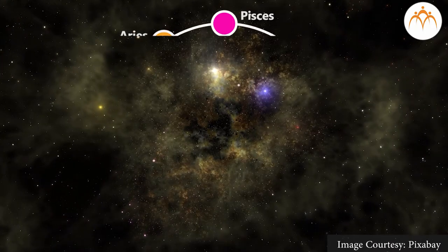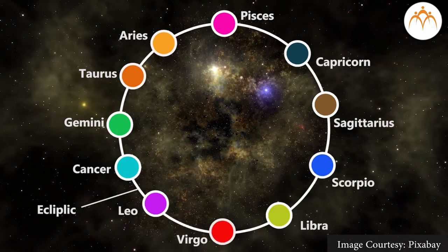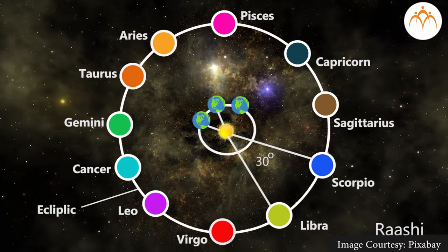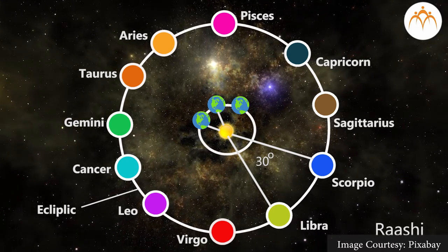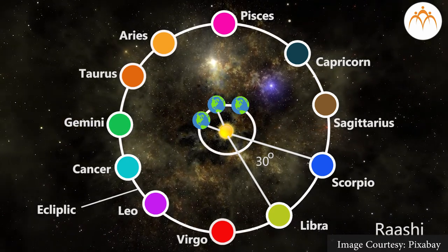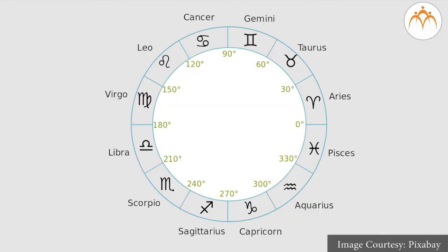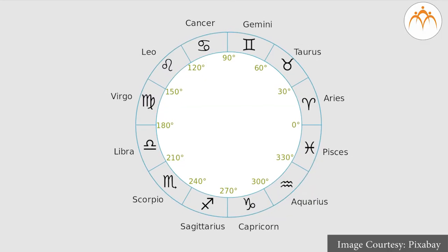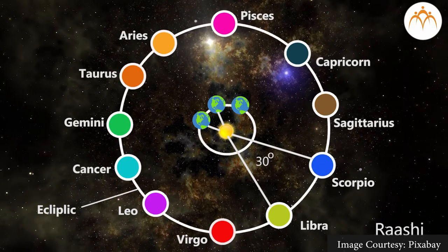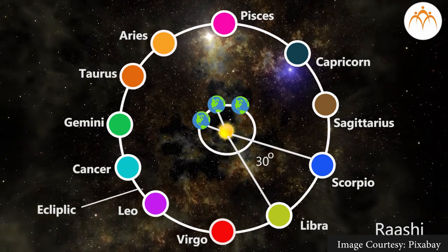In zodiacal constellations, the ecliptic is divided into 12 equal parts — each part is known as a rashi, or zodiac sign. The names of the zodiac constellations are: Aries, Taurus, Gemini, Cancer, Leo, Virgo, Libra, Scorpio, Sagittarius, Capricorn, Aquarius, and Pisces. Each zodiac constellation subtends an angle of 30 degrees at the center.